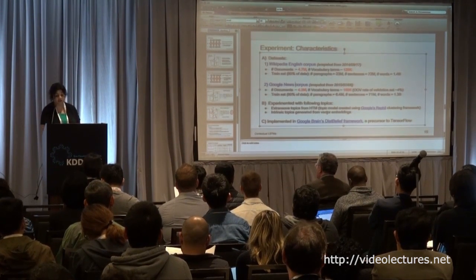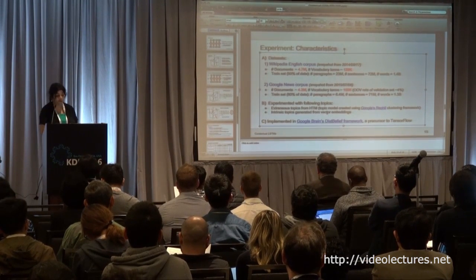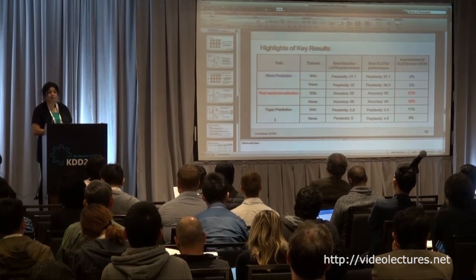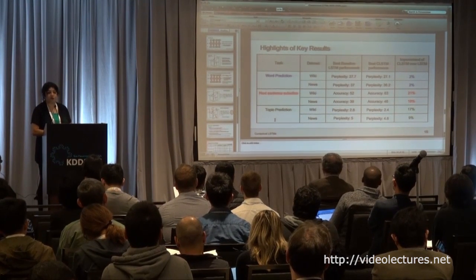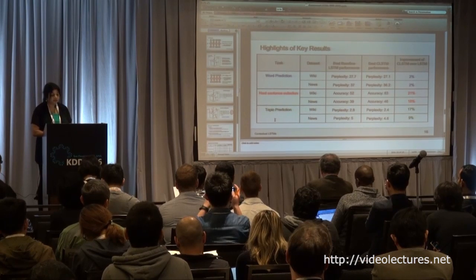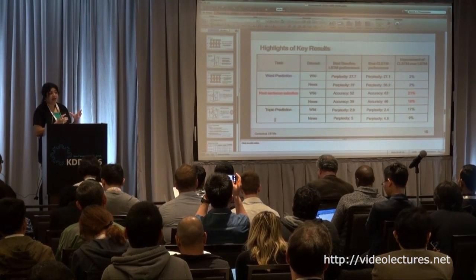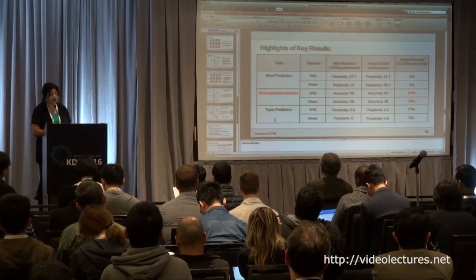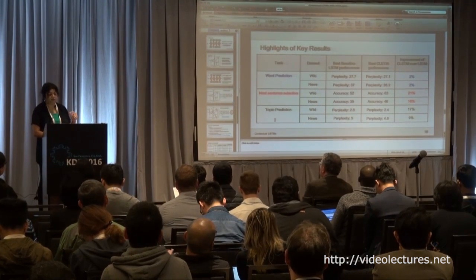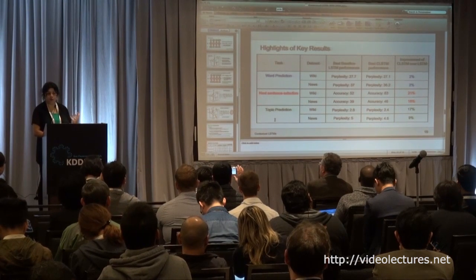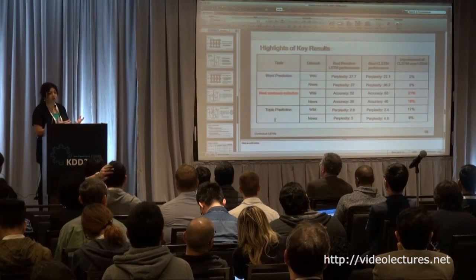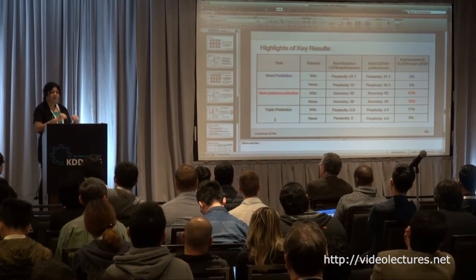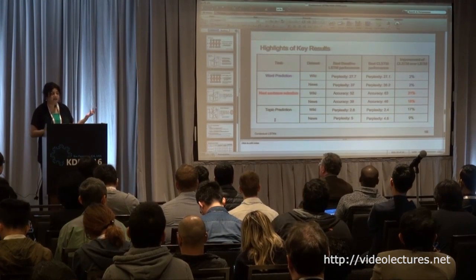Coming to the results: for the word prediction model, our baseline was the LSTM model and our proposed model is the CLSTM. For the Wikipedia data, we saw about 2% improvement on the word prediction task. For next sentence selection, we randomly sample paragraphs from Wikipedia — say there are four sentences, we look at the first three and try to predict the fourth. We prepare a candidate set of 50 sentences, with the rest randomly selected from other parts of Wikipedia, and the task is to select the correct one.